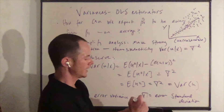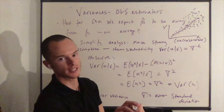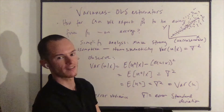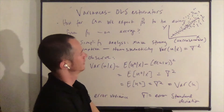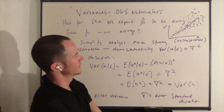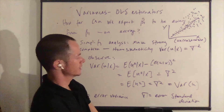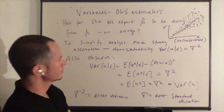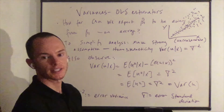Having this result — heteroscedasticity — is more common than having a constant variance over the domain of x. But we're going to make this assumption because it simplifies our analysis.